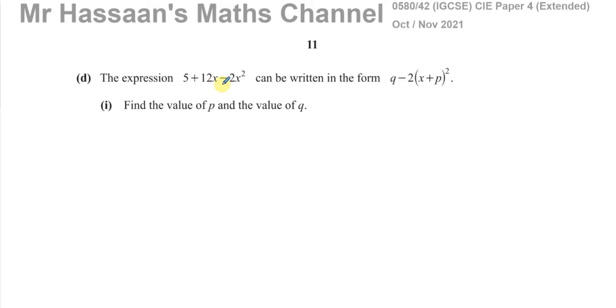It says the expression 5 + 12x - 2x² can be written in the form q - 2(x + p)². Find the value of p and the value of q.